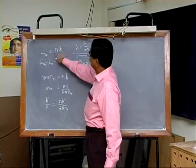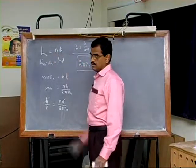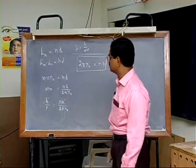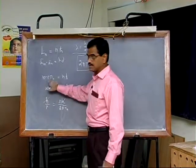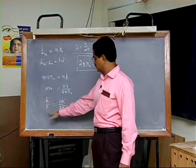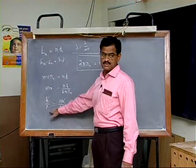If you take angular momentum, nh cross, in the nh cross, you can see mv. You can see h by λ, which is the de Broglie wavelength.